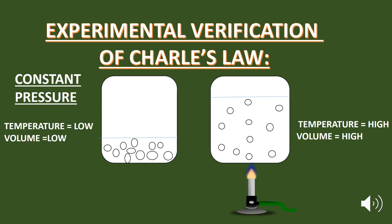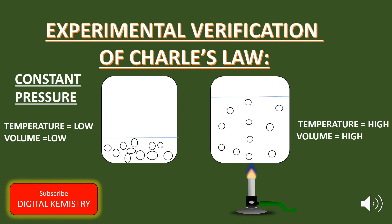Experimental verification of Charles' law. As you can see here in the diagram, we have two cylinders with a movable piston. These cylinders are filled with gas, and in both cases the pressure is kept constant. At low temperature, the kinetic energy of the molecules decreases. As a result, the number of collisions of the molecules per second with the walls of the container also decreases. So at a constant pressure, the volume must decrease. It shows that at a constant pressure, the volume of a gas is directly proportional to the temperature. As you can see in the diagram, at low temperature, the volume of a gas is also low.